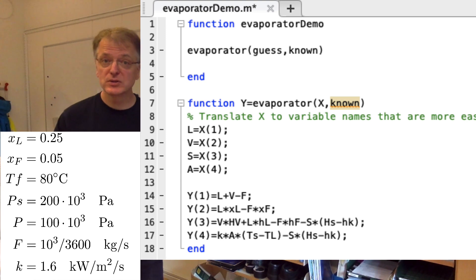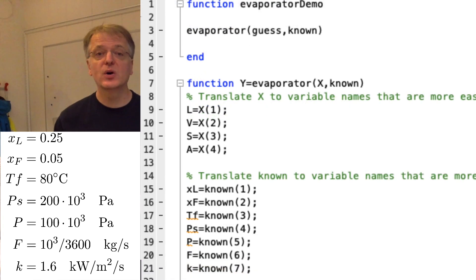Once again, I prefer to use variable names that I understand, so let us translate our vector with known parameters to variables called XL, XF and so on.